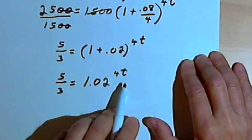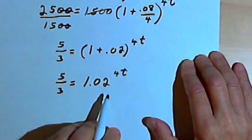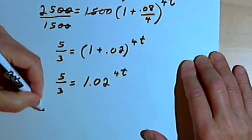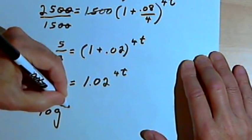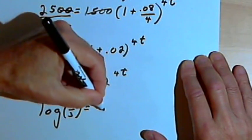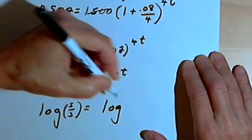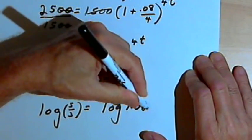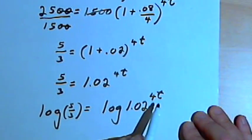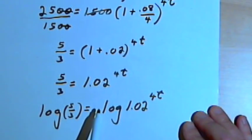So the t is an exponent. When we're looking for an exponent in a problem like this, we want to take the logs on both sides of the equation. So I'm going to have the log of 5 thirds equals the log of 1.02 to the 4t. And then using the rule that says I can take the exponent and make it into the coefficient of a logarithm.